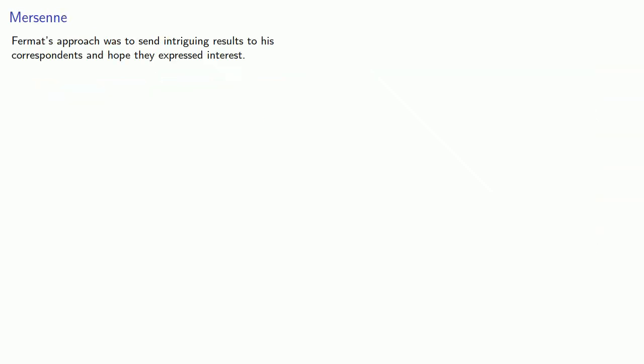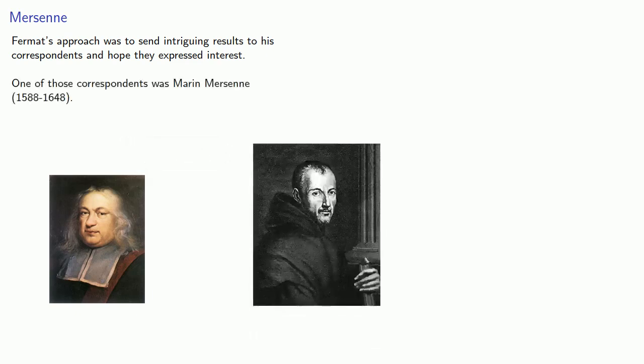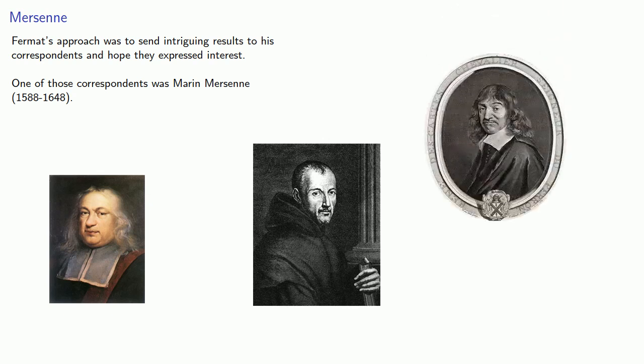Fermat's approach was to send intriguing results to his correspondents and hope they expressed interest. One of those correspondents was Marin Mersenne, a French Minim friar. Through Mersenne, Fermat was put in contact with other French mathematicians, including Descartes and Frenicle de Bessy. Unfortunately, Mersenne was not above stirring up trouble.